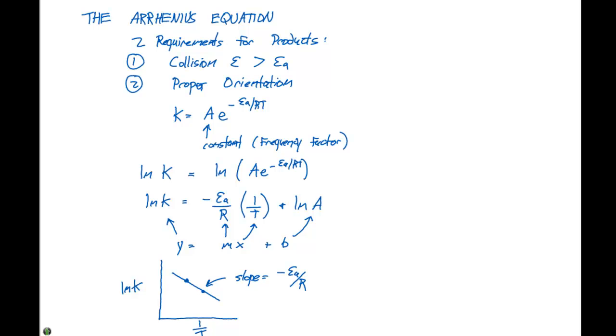So if we have two data points, data point number one we'll say is going to be the ln of K1. That's going to equal negative Ea divided by R times 1 over T1 plus the ln of A.